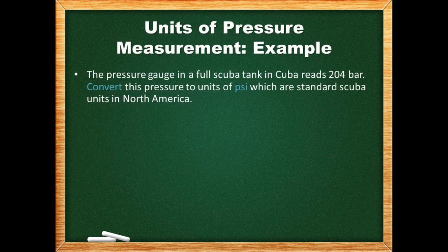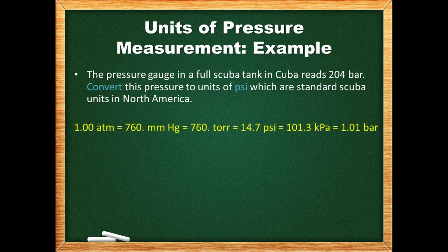As there are several other units that can be used to measure pressure, we should review how to convert between them. In this example we convert the pressure of a full scuba tank from 204 bar to psi. We already defined 760 millimeters mercury as standard atmospheric pressure, which leads to the unit of atmospheres. Because millimeters mercury is awkward to write, this unit is often called a torr in honor of Torricelli. Pressure is force per unit area, so the unit of pounds per square inch, or psi, makes perfect sense.